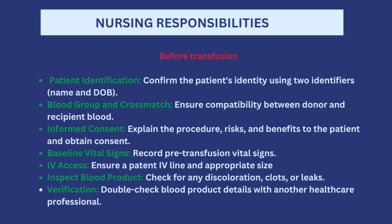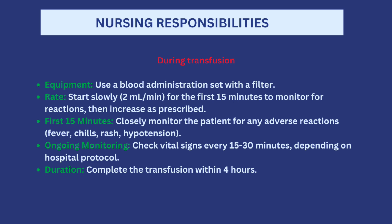Inspect the blood product for any discoloration, clots, or leakages around the blood bag. Verify the blood bag with another healthcare professional together to prevent mistakes. Ensure you are using the correct equipment — specifically a blood-giving set, which usually has a filter. Start the blood transfusion slowly at about two millilitres per minute; if there is no infusion pump, make sure you are starting slowly for the first 15 minutes, watching for any reactions, and then increase to the normal flow rate.